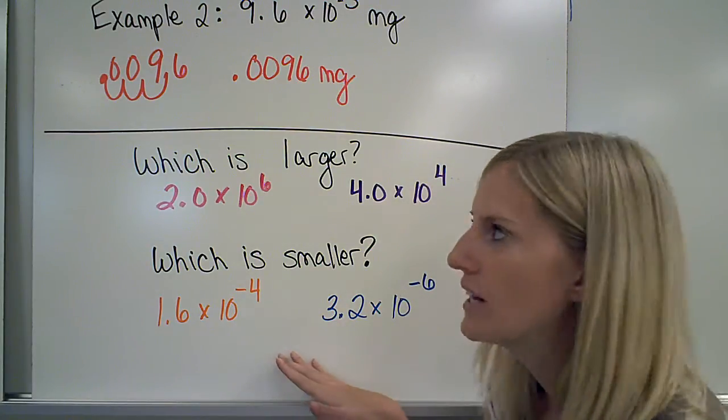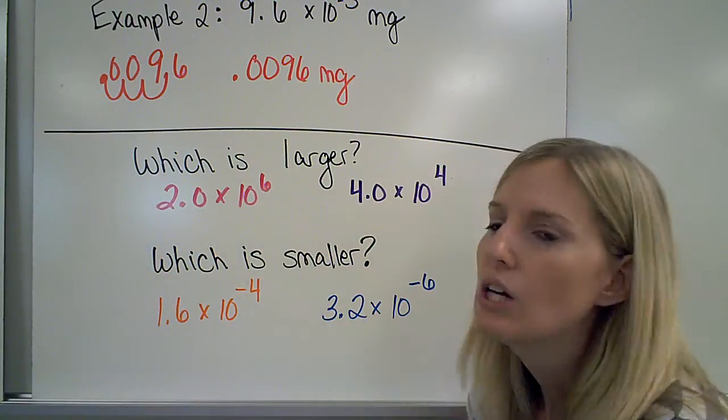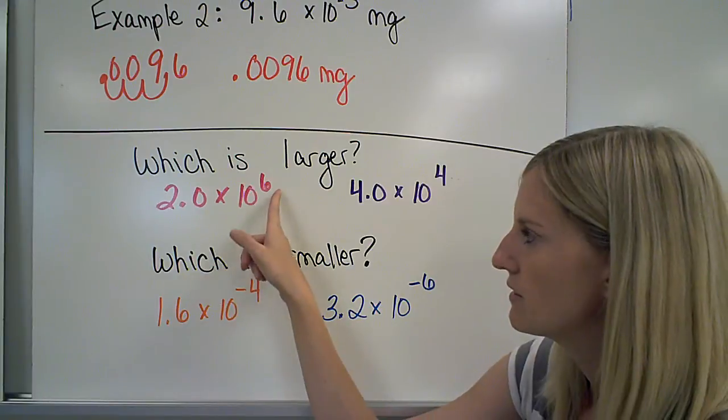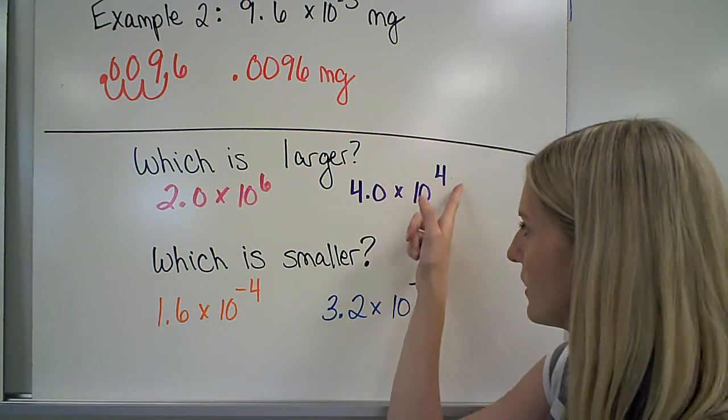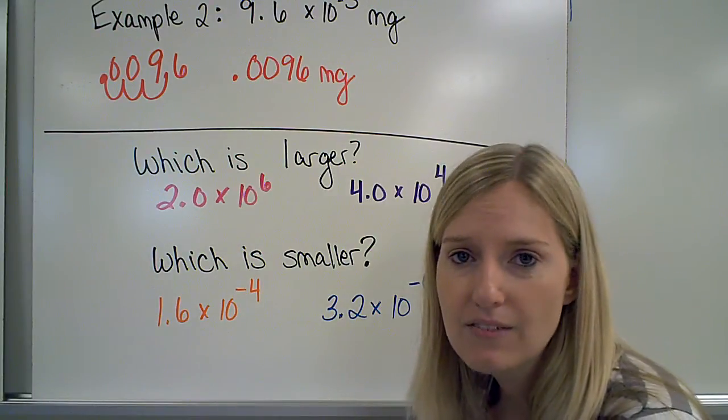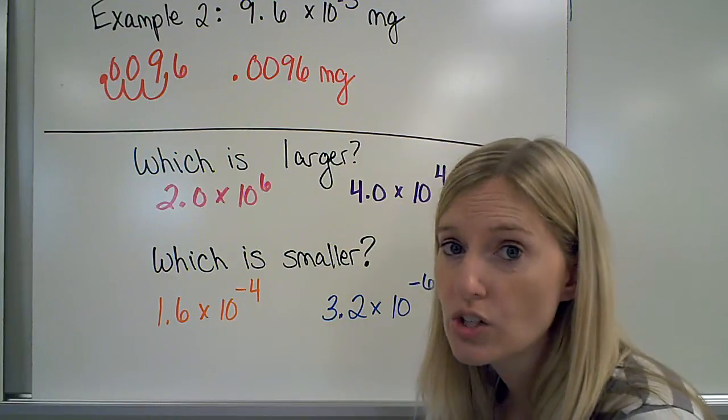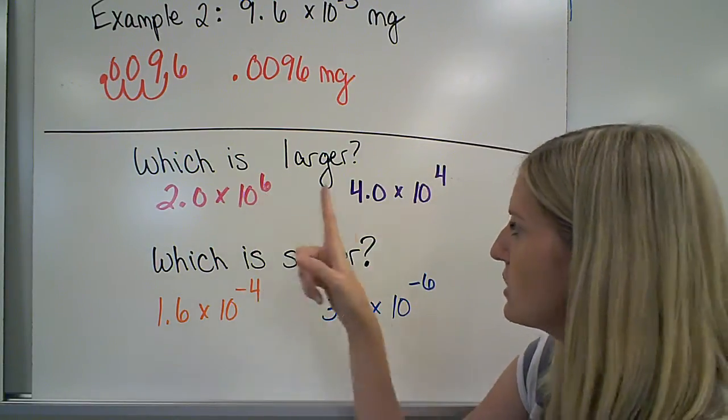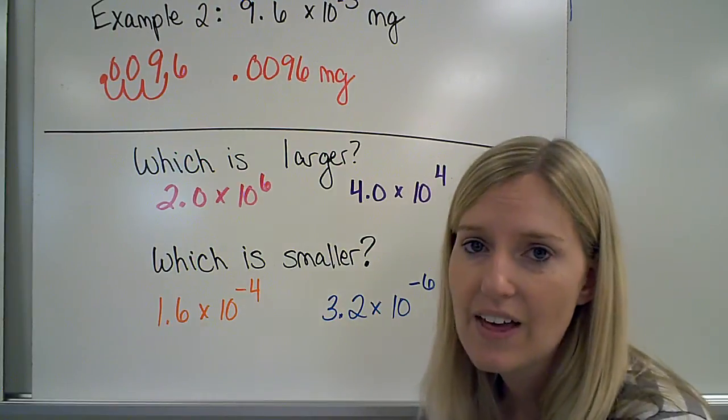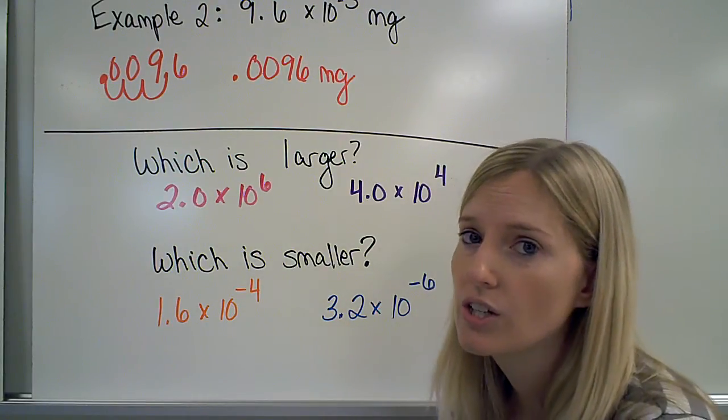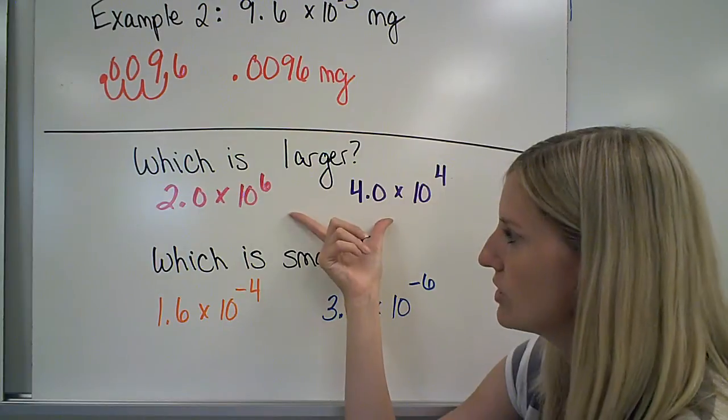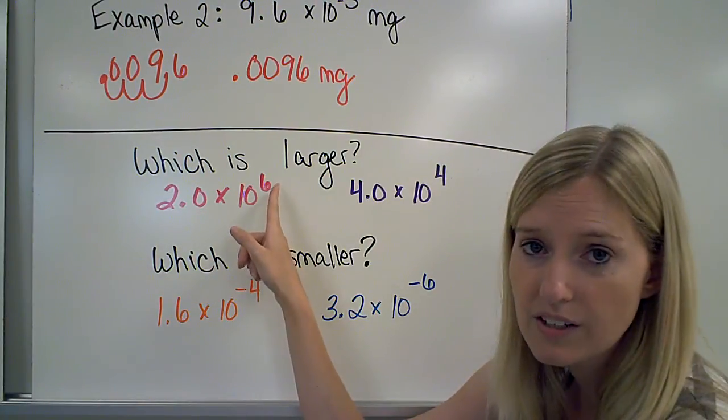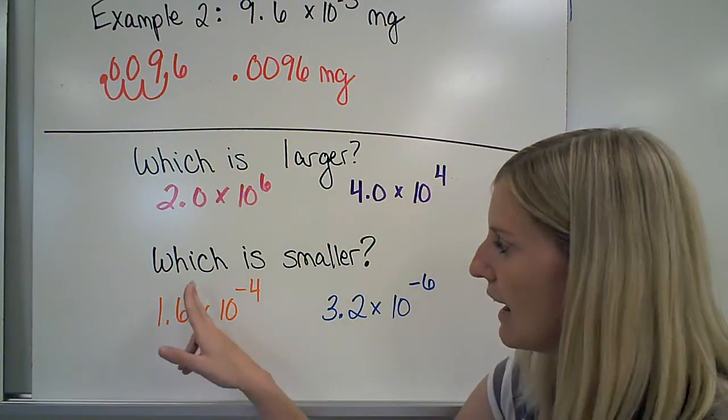So let's apply some of our knowledge a little bit. Let's look at these two numbers. Which one of these would be a larger number? 2.0 times 10 to the 6, or 4.0 times 10 to the 4? We know a positive exponent means that it's a large or larger number. So the larger the exponent will be, that's what determines what's a larger number. So out of these two, this is the larger number because the positive exponent is larger.